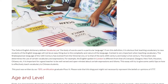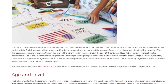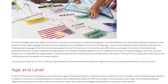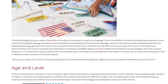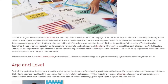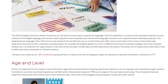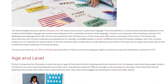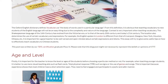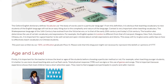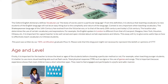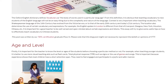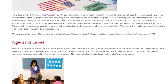The Shakespearean language of the 16th century has evolved from the Victorian era to that of the early 20th century and today's 21st century. The location also determines the use of certain vocabulary and expressions. For example, the English spoken in London is different from that of Liverpool, Glasgow, New York, Houston, Ottawa, etc. It is important for a good teacher to be well-versed and open-minded about certain expressions and idioms. This essay will try to give some useful tips on how to effectively teach vocabulary to Chinese students.